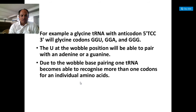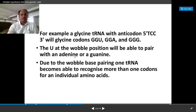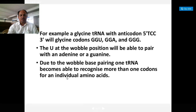So if you take the example of a glycine amino acid, the tRNA of that glycine has the anticodon 5' GCC 3', and the codons are, for example, GGU, GGA, and GGG. Then the uracil at the wobble position is able to pair with adenine or guanine. So this uracil at the third position or wobble position can pair with adenine or it can pair with guanine. And due to this wobble base pairing, one tRNA molecule will become able to recognize more than one codons for an individual amino acid.